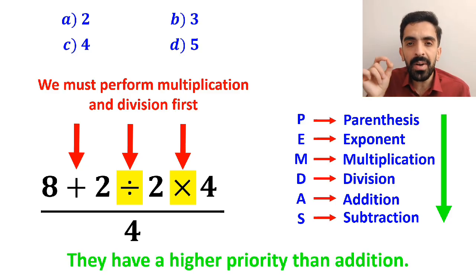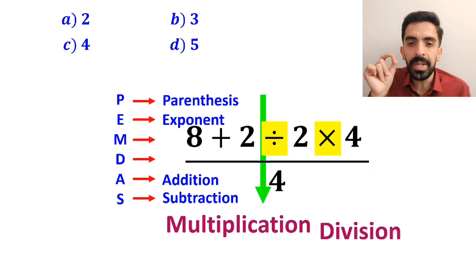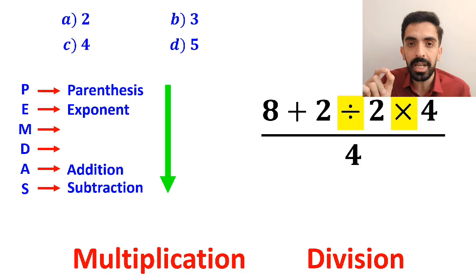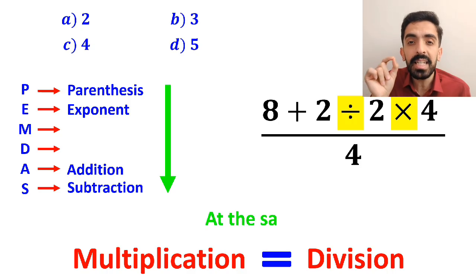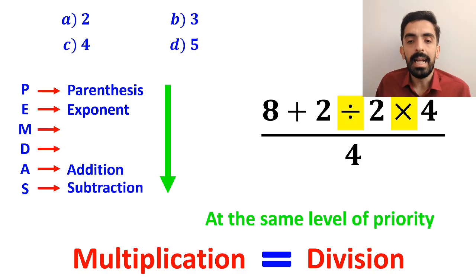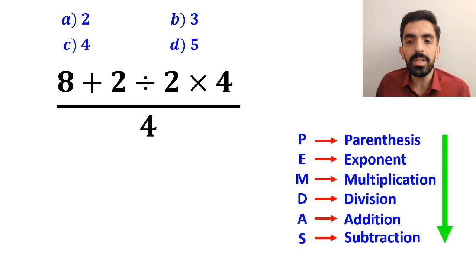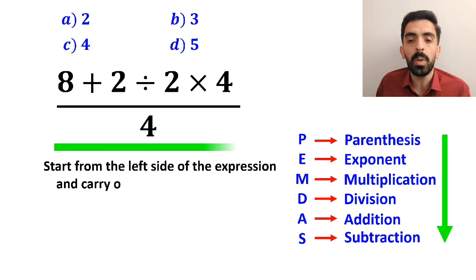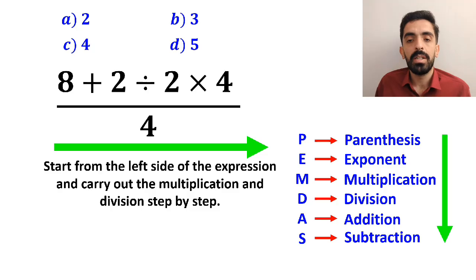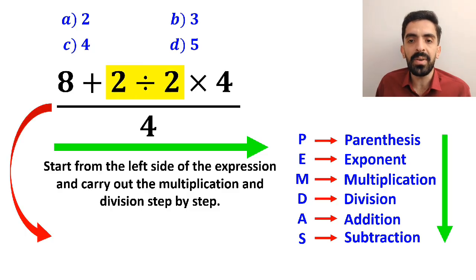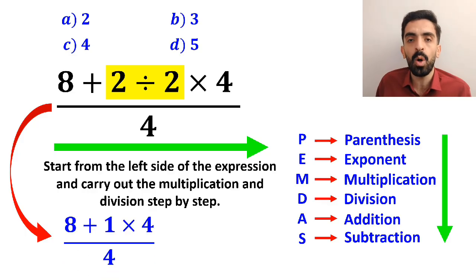However, it's very important to remember that multiplication and division are at the same level of precedence. In this case, the best thing to do is to start from the left side of the expression and carry out the multiplication and division step by step. So first we go for the division between the 2s, and we can rewrite the whole expression as 8 plus 1 times 4 over 4.